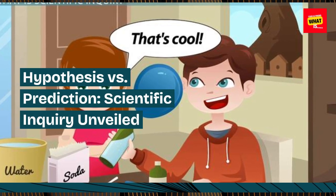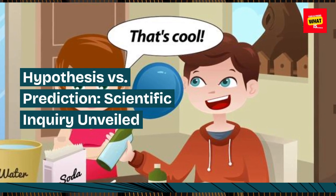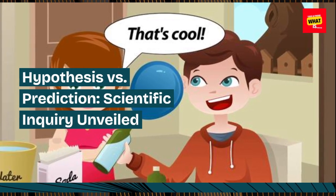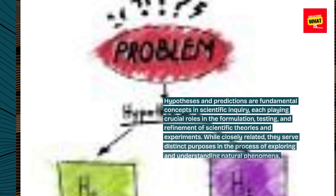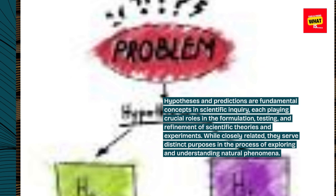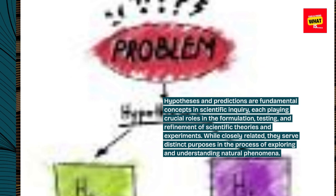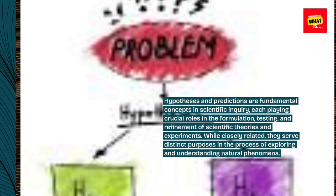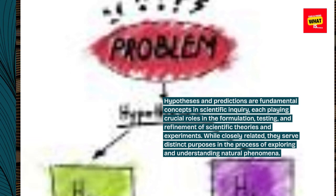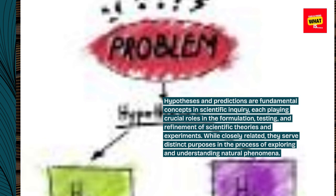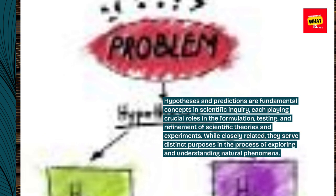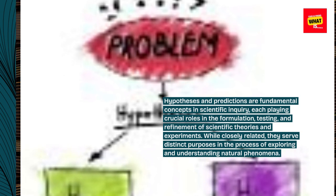Hypothesis vs. Prediction: Scientific Inquiry Unveiled. Hypothesis and predictions are fundamental concepts in scientific inquiry, each playing crucial roles in the formulation, testing, and refinement of scientific theories and experiments. While closely related, they serve distinct purposes in the process of exploring and understanding natural phenomena.